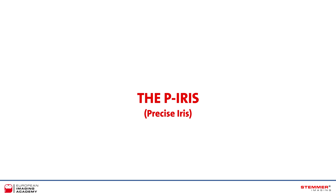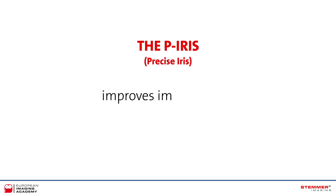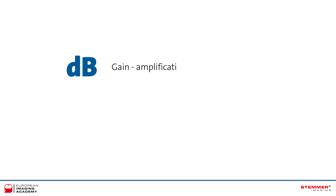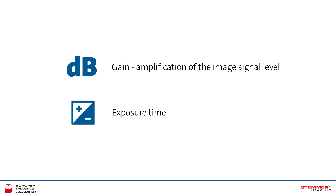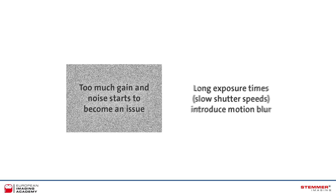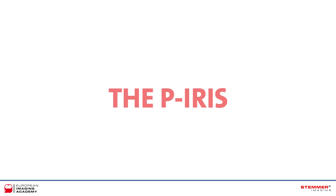The P-Iris — the precise iris — was designed to overcome all of the drawbacks just mentioned. It doesn't automatically change the aperture size just to alter the amount of light reaching the sensor; it does so to improve image quality. This is achieved by altering camera settings while the iris is adjusted: the gain, which is the amplification of the image signal level, and the exposure time, which is the duration of exposure to light. These settings need to be finely balanced, as extremes of either can result in unfavourable effects — too much gain and noise becomes an issue, whilst too long an exposure time introduces motion blur. Taking potential diffraction and aberration effects into account simultaneously, the combination of all these settings is what makes the P-Iris so much more precise than simply opening or closing the aperture in response to variations in light.